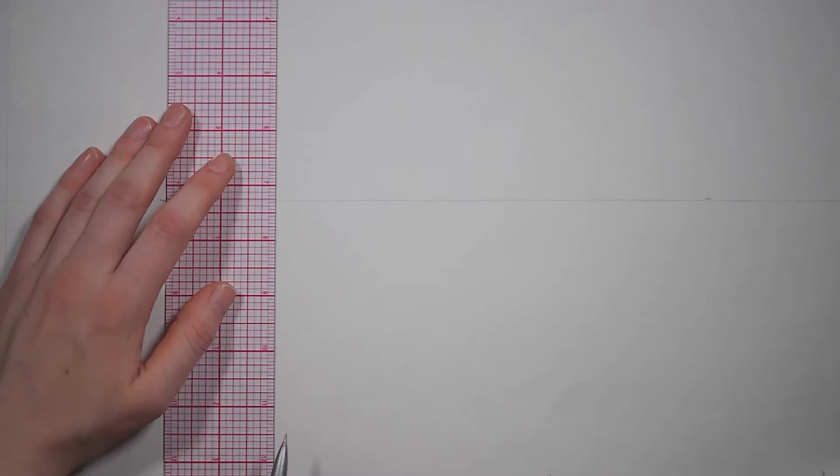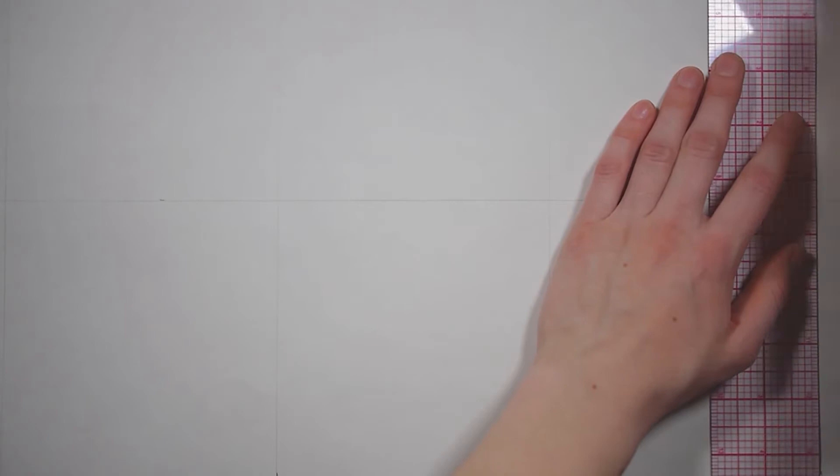When you are ready to use your stencil, you need to give yourself some guidelines. Because I am working on such a small scale, I gave myself a center line for each repeat, but when working on a huge wall for a set, you'll want to give yourself a few marks or snap lines so that you can make sure you are still repeating correctly.